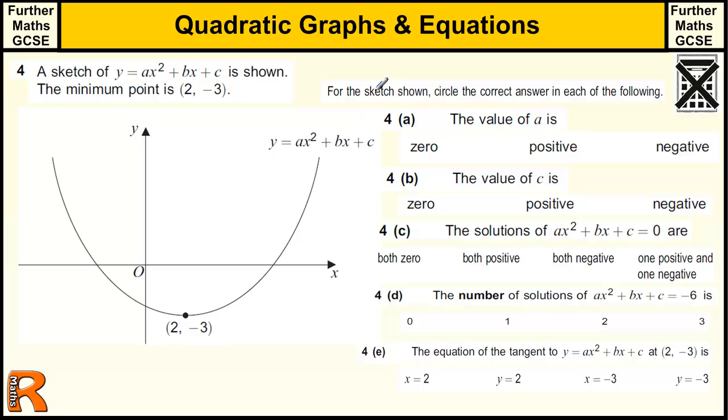So for the sketch shown, circle the correct answer for each of the following. The value of a is zero, positive, or negative. Well, the value of a tells you what sort of shape this curve is. Because it's a U shape, first of all, that means it has a value, it's not zero. If it was zero, this wouldn't be a quadratic, it would be a straight line. So it would be a diagonal line like that or like this. But because it's a curve shape, it has to be a value. If it's positive...